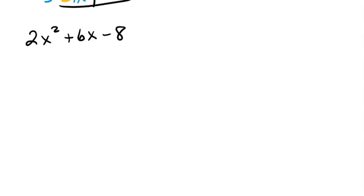But if we look at all three parts of this, we notice that they have a 2 in common. So I'm going to start by factoring out that 2. So I factor out the 2. I divide each of those by 2, so I get x squared plus 3x minus 4.